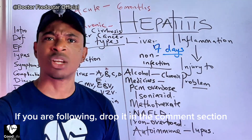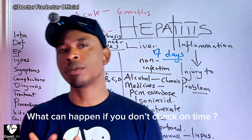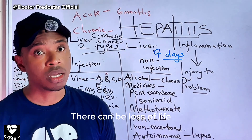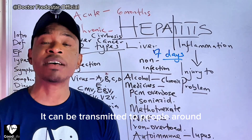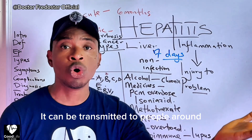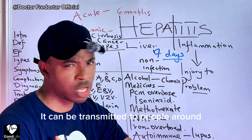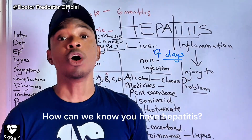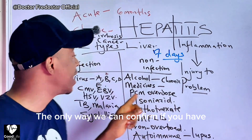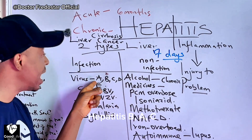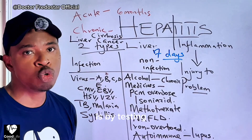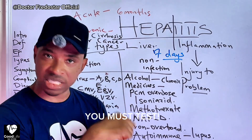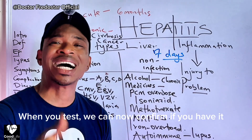The problem is, if you know on time, you can address it. But if you spoil your liver and give it to another person without knowing, you can cause a lot of problems. So how can we know if you have hepatitis? The only way to know is to do a test. There is no way you can look me in the eye and say you have it — you must test.